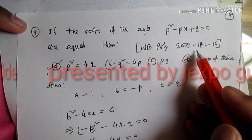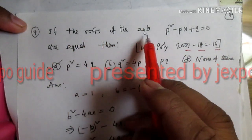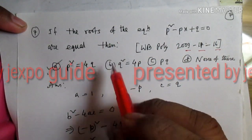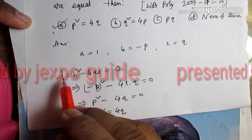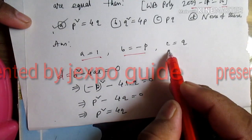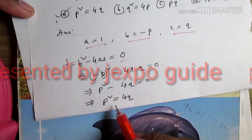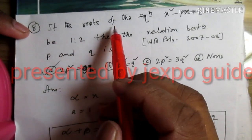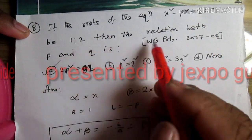Question number 7, appearing in 2009, 2011, and 2016: if the roots of the equation x squared minus px plus q equal to 0 are equal, find the relation between p and q. The condition for equal roots is d equal to 0, where d equals b squared minus 4c.